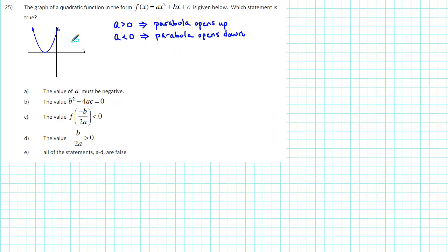In this case, the graph opens up. That indicates that a must be greater than 0 or positive. So the value of a must be negative is a false statement. Option a is not the correct answer.